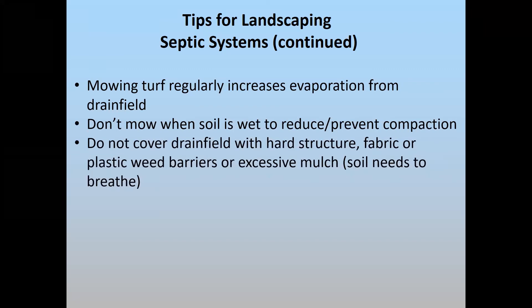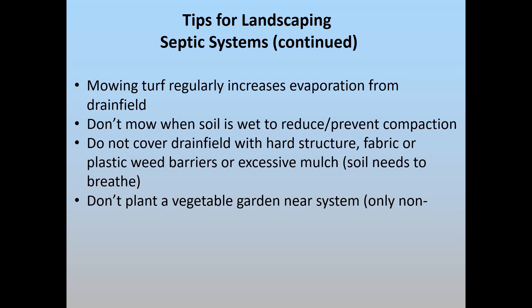Be sure that you do not cover the drain field with any sort of hard structure, weed fabrics, or excessive mulch — that soil needs to breathe. Certainly you don't want to plant a vegetable garden near or over your system. Non-edible plants like flowers and grasses are fine. Depending upon the type of drain field, particularly a drip system, even though wastewater is designed to go down, it can move horizontally. In a rainy season, infiltration may be diminished and there's a risk of wastewater getting near the surface — you wouldn't want edible plants picking that up. Vegetable gardens and septic systems are not a good idea.